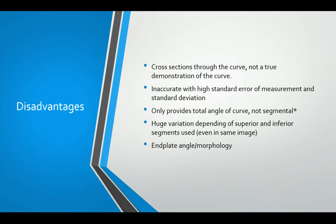Other disadvantages of using the four-line Cobb angle are that it takes cross-sections through the curve, which isn't a true demonstration of the actual slope of the curve. It has a high standard deviation and area of measurement error. It only provides a total angle of curve and not the segmental angles, which is important for biomechanical analysis. There is huge variation depending on which inferior and superior end plates you choose, and the end plate morphology can vary — the end plate of C2 tends to have a very curved surface, so you may not be taking an accurate measurement.